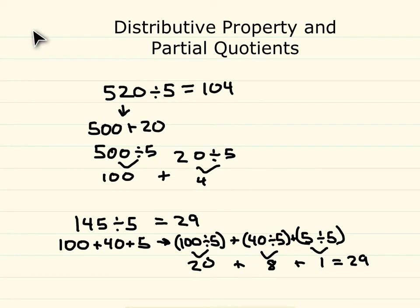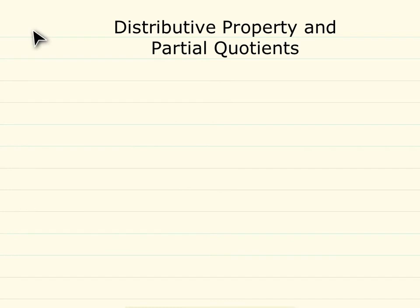In this example, we're going to use distributive property, but yet we're not going to break it up completely. So here we have the number 327 divided by 3. If we're using expanded form to break up 327, it would be 300 plus 20 plus 7.